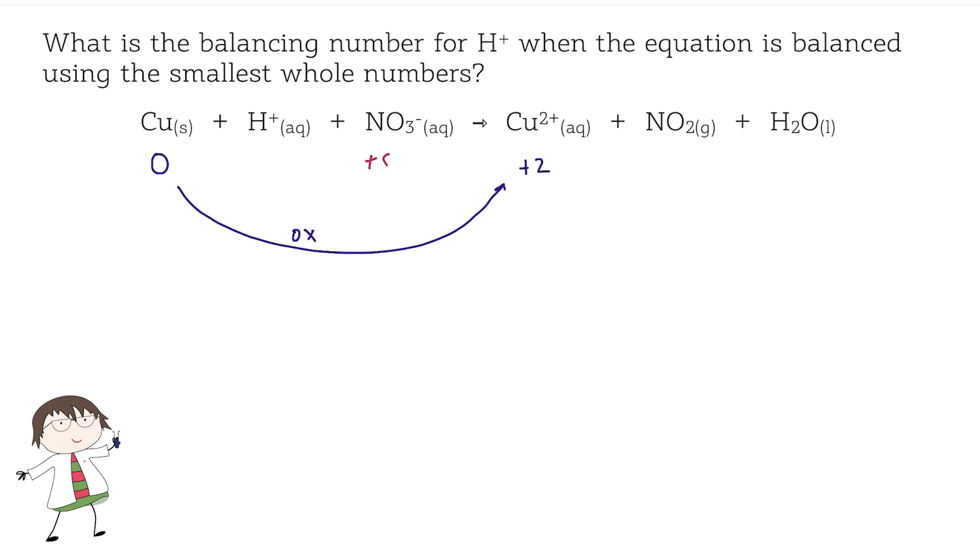Nitrogen goes from an oxidation state of plus five in the nitrate ion to plus four in nitrogen dioxide. So we can see that the nitrogen has been reduced.